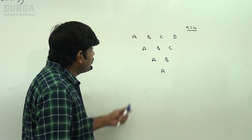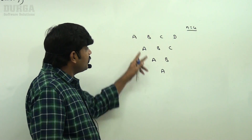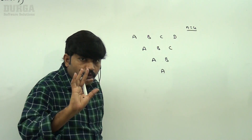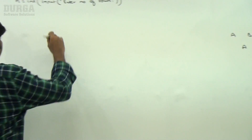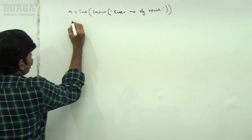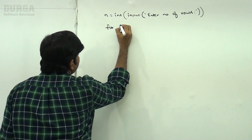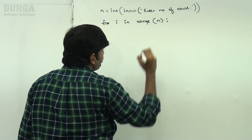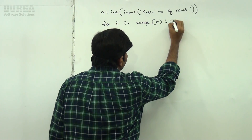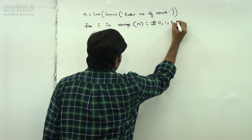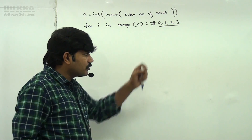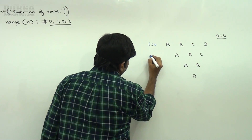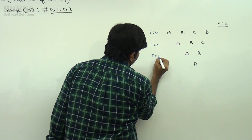This is an inverted pyramid using alphabet symbols. If N is equal to 4, how many rows are there? Four rows. For i in range of N — if N is equal to 4, the i values go from 0 to 3: i is 0, i is 1, i is 2, i is 3.